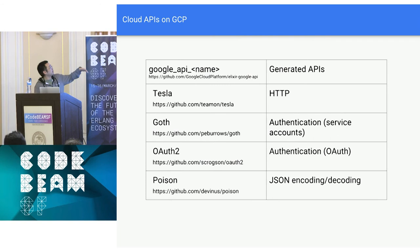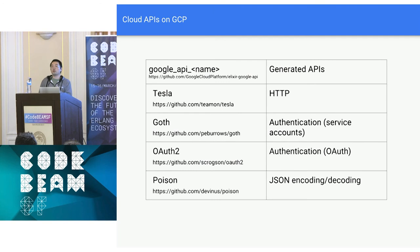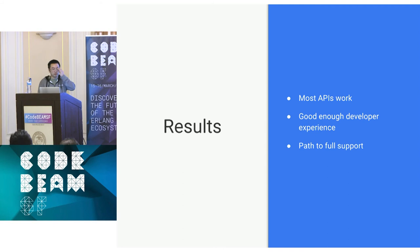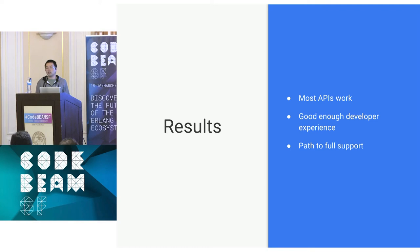A little more on what the libraries look like: we have individual libraries using Tesla, and auth is actually pluggable. Some of our APIs require three-legged OAuth where you're authenticating on behalf of someone else — you can use the OAuth 2 library directly, but really the interface is just plugging in an OAuth token. Most APIs work, though we still have random issues on some of them. It's a good enough developer experience, and we have a path for full support — adding an extensions layer in the future, or even handwriting idiomatic interfaces.